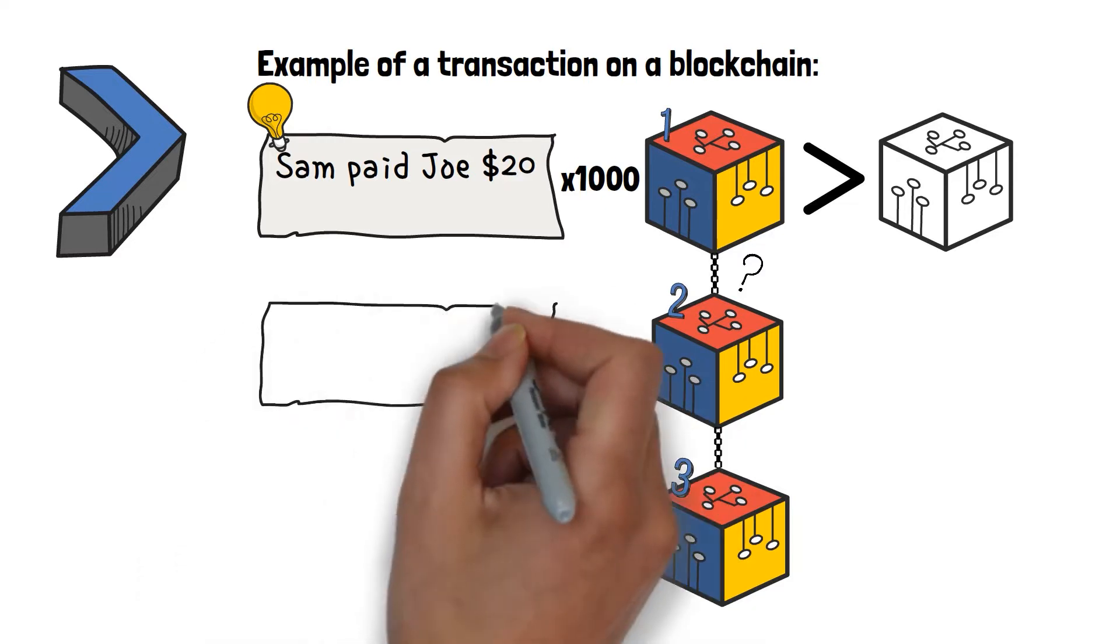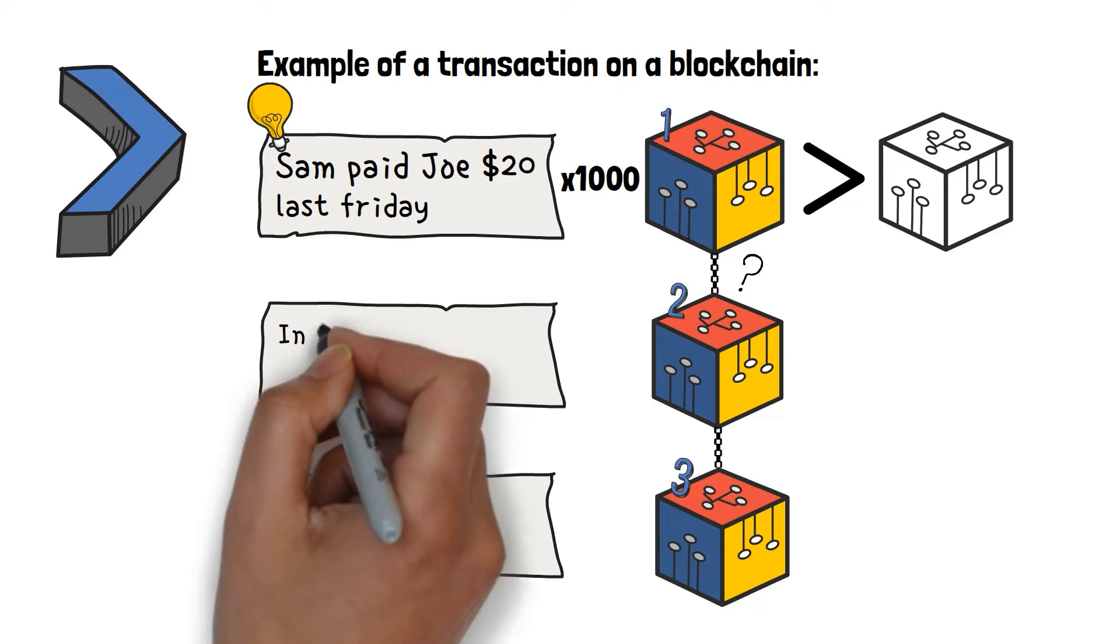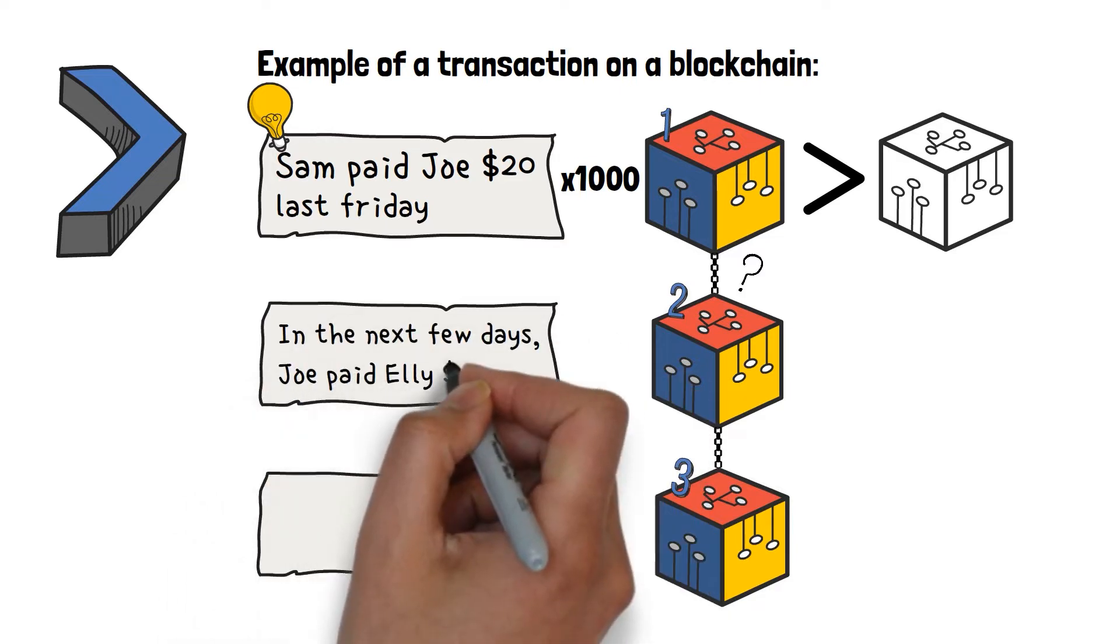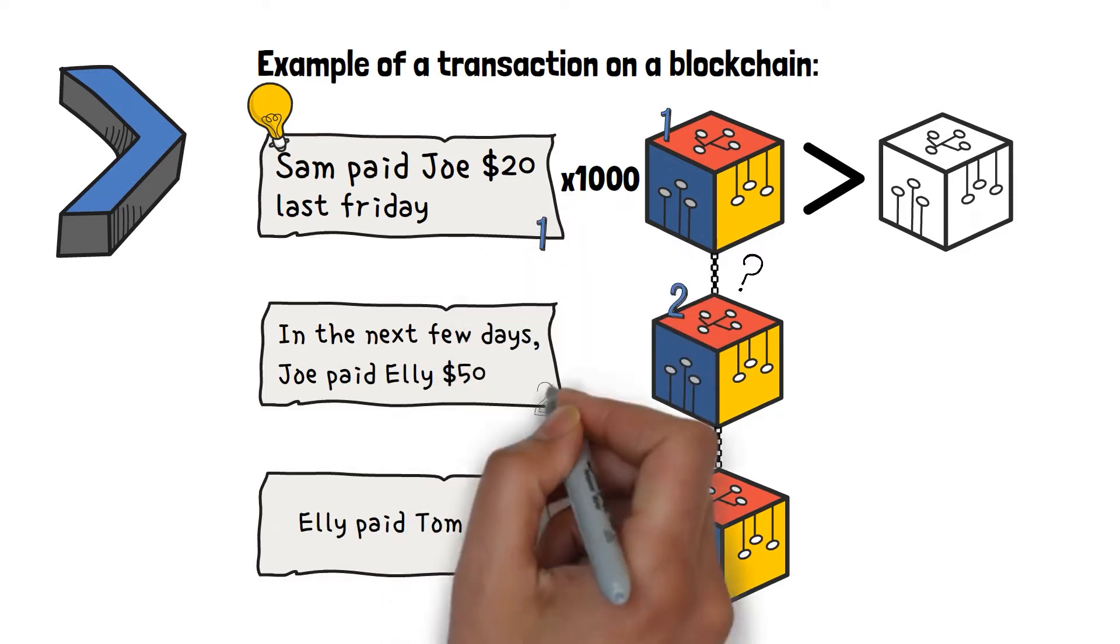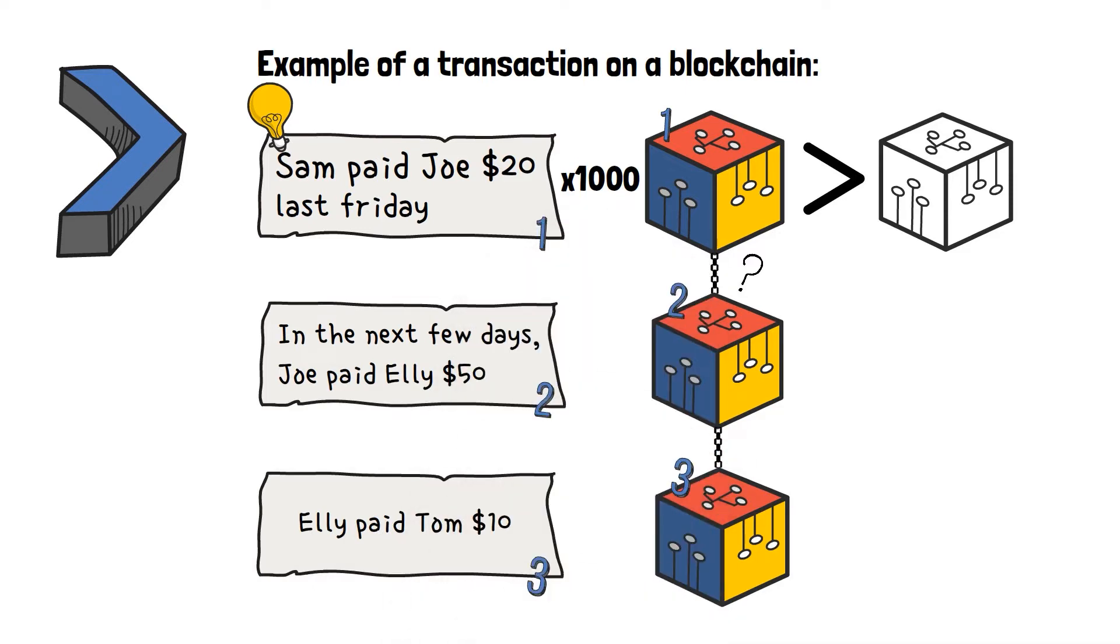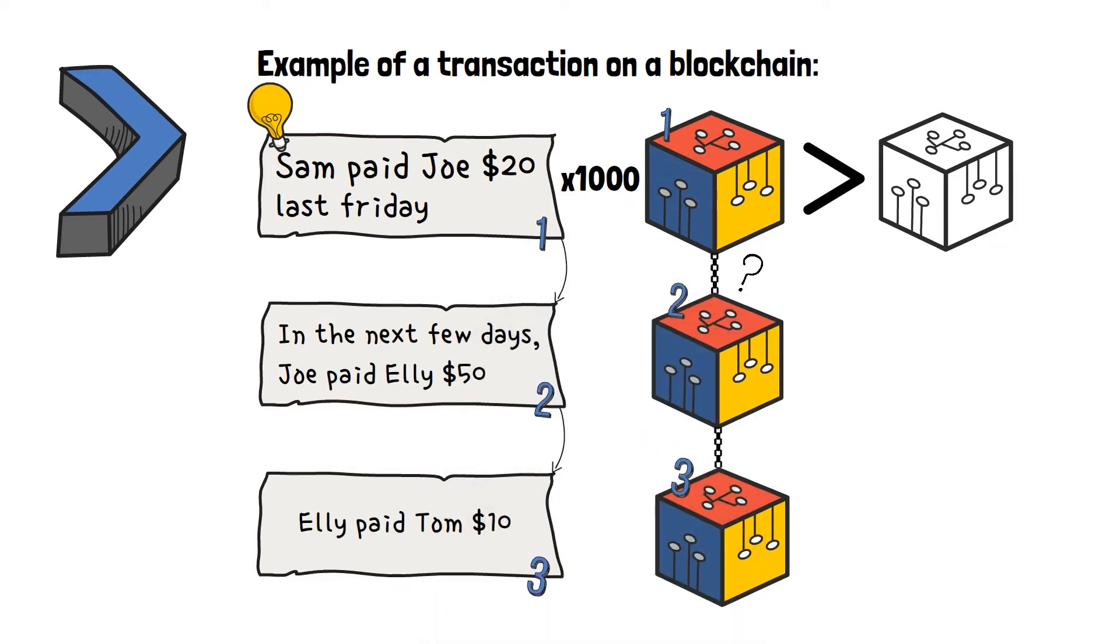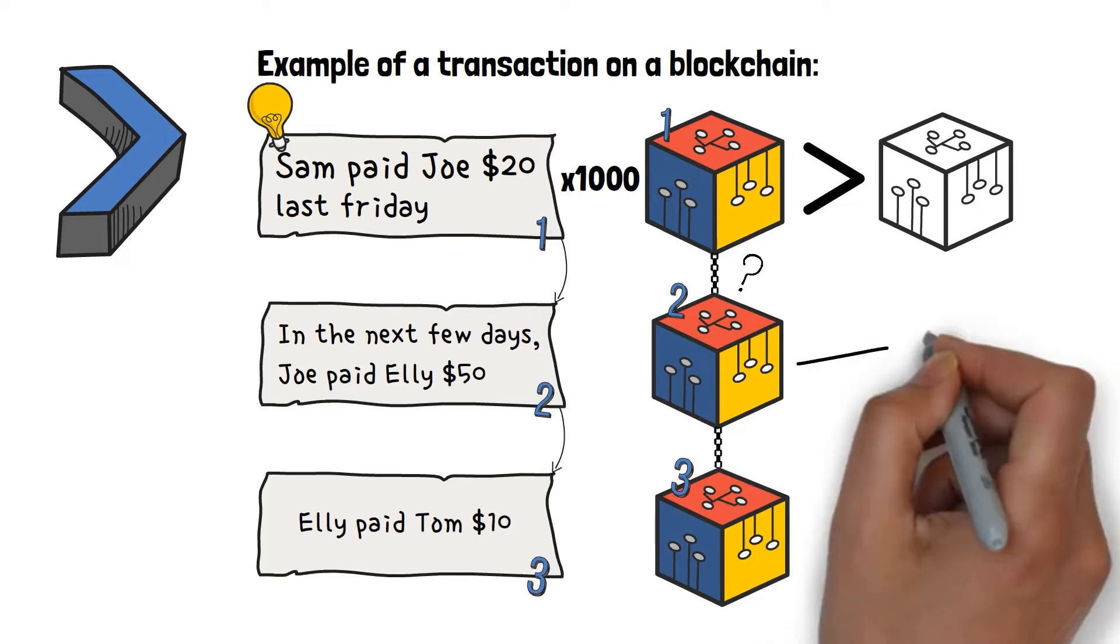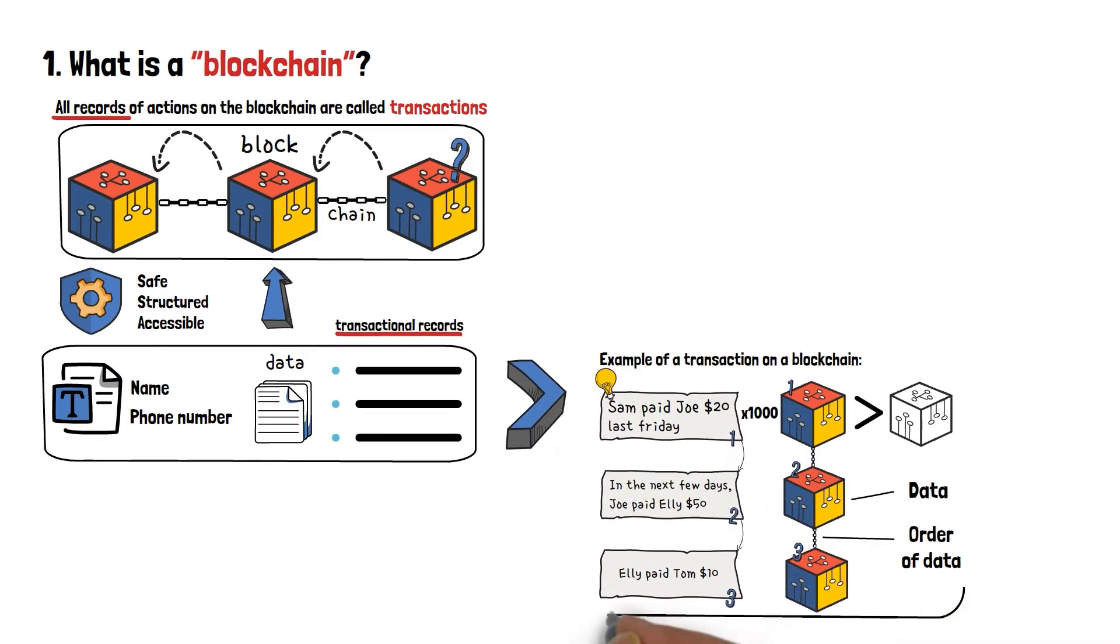Imagine that, in our earlier example, Sam paid Joe $20 last Friday. In the next few days, Joe paid Ellie $50, and Ellie paid Tom $10. All of these transactions happened in that order, and thus, it's important for them to be tracked in that order as well. Blocks of information can contain the data, but them being connected by virtual chains helps to track when each transaction happened, and how they are all connected too.